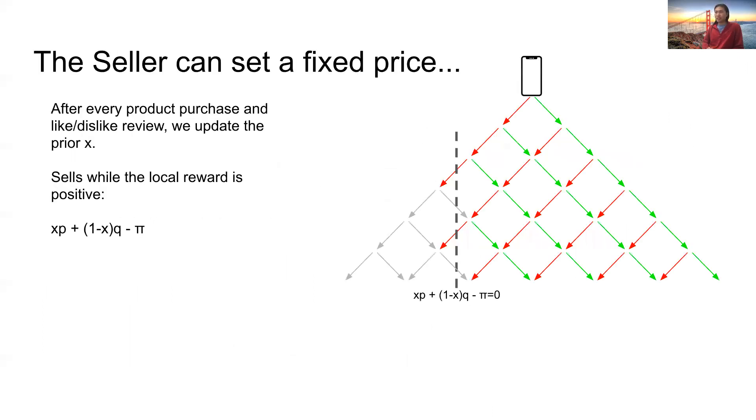The first pricing strategy we can consider is the seller setting a fixed price. This price does not change. And so, we note that after every product purchase and every like or dislike review, and after the buyers and the sellers both update the prior X, this product will only continue selling while the local reward for the buyer is positive.